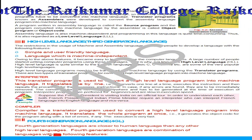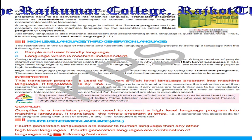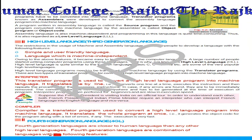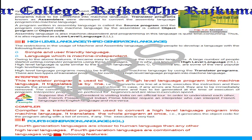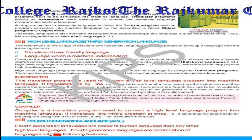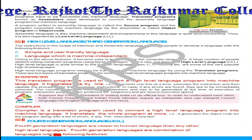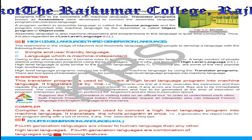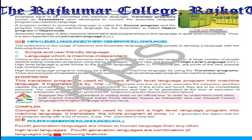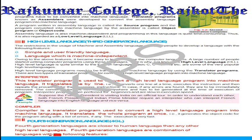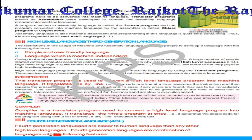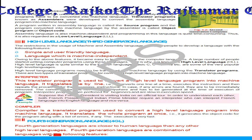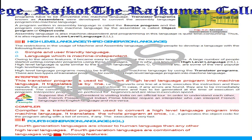The compiler is also a translator program used to convert a high level language program into machine language, but it translates the whole program at once. So the key difference is: the interpreter translates line by line, and the compiler translates the whole program at once.